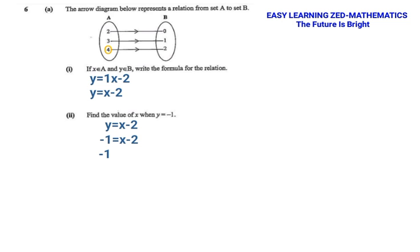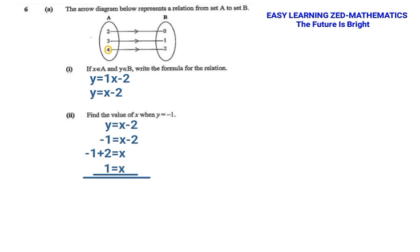So I'm going to write x is equal to negative 1 plus 2. Then working out that expression: negative 1 plus 2 gives us 1, which is equal to x. So the value of x when y is equal to negative 1 is 1. Therefore, the value of x is 1.